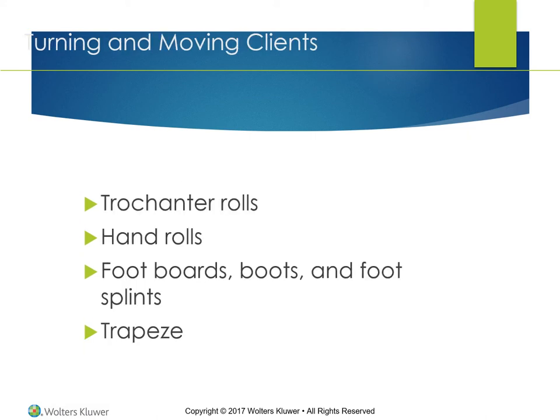In some cases the client may be fully capable of assisting with turning or moving. The amount of client assistance depends on factors such as size, weight, mental status, and strength. If all criteria suggest the nurse and client can accomplish the task, the nurse enlists the client's cooperation by explaining the plan and how the client can help. Assistive devices and additional caregivers are needed when turning or moving a client who cannot change positions independently. Good turning and moving skills are important to prevent injury to the nurse and the client.